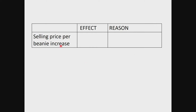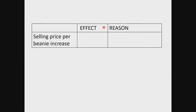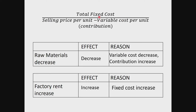If the selling price per beanie increases, the contribution (denominator) becomes bigger. Dividing by a bigger number gives a smaller answer, so the break-even point decreases. The reason: the contribution increased. These three examples show how to analyze whether the break-even point will increase or decrease based on changes to fixed costs, variable costs, or selling price.